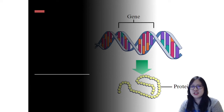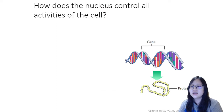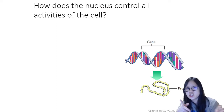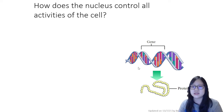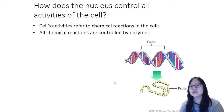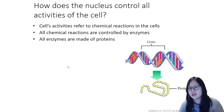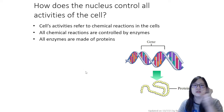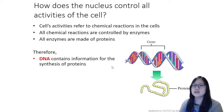Hello everyone and welcome to Chapter 6, Part 2A — Protein Synthesis. Before we start, let's consider this question: how does the nucleus control all activities of the cell? Activities means chemical reactions in the cells, and all chemical reactions are technically controlled by enzymes. All enzymes are made of proteins. Working back, we realize that the nucleus controls all activities of the cell by controlling protein synthesis.